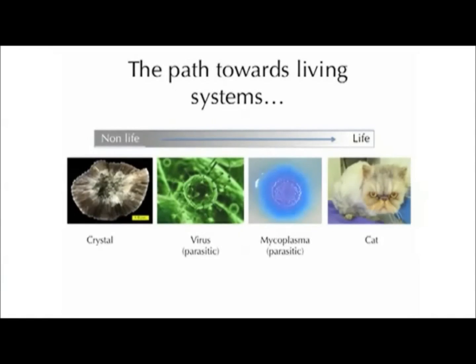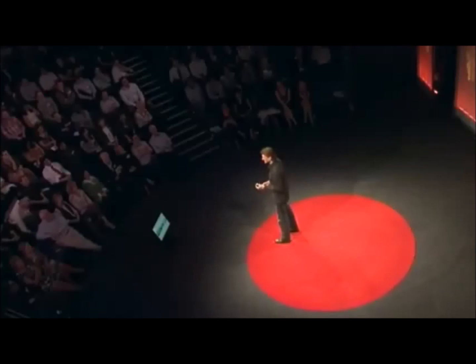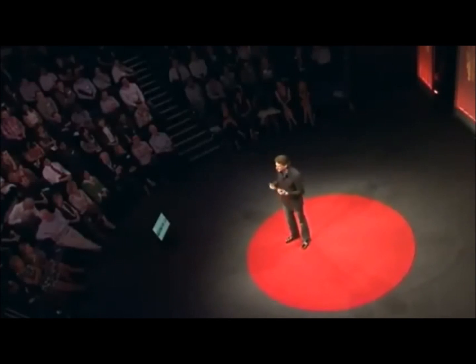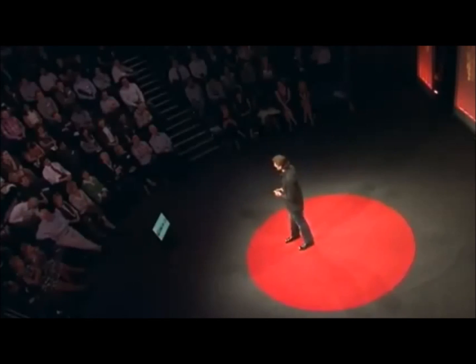We'll just take one example: a virus is a natural system, but it's very simple, doesn't really satisfy all the requirements or have all the characteristics of living systems, and is in fact a parasite on other living systems in order to reproduce and evolve.